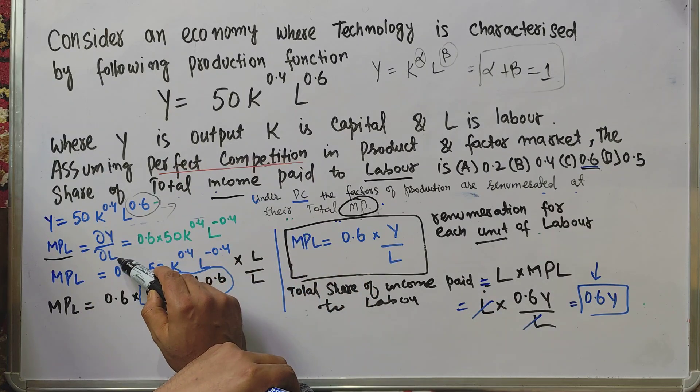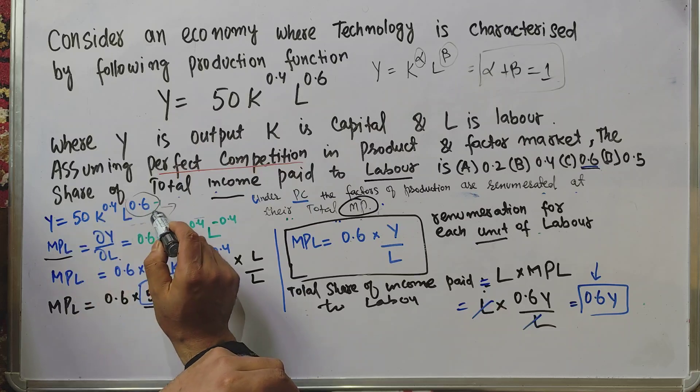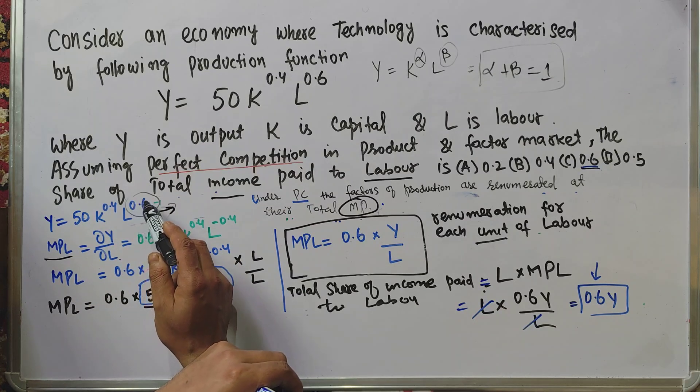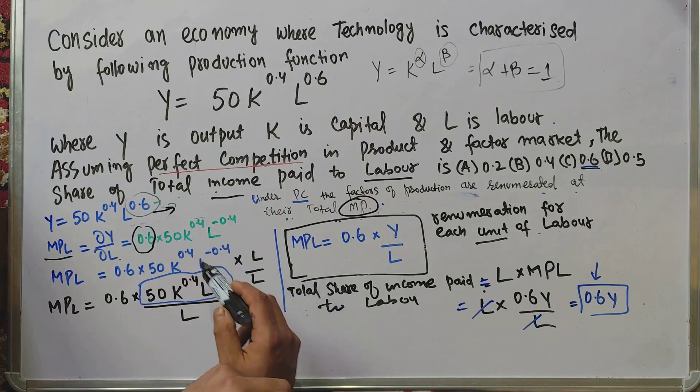Taking the partial derivative with respect to L, the exponent of L becomes the coefficient. So we have 0.6 times 50K^0.4, where K^0.4 remains the same because we're taking the partial with respect to L.